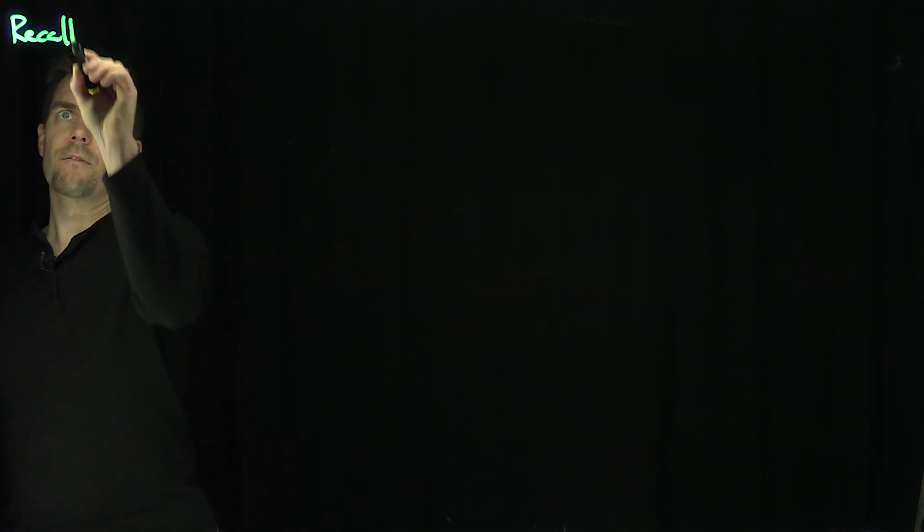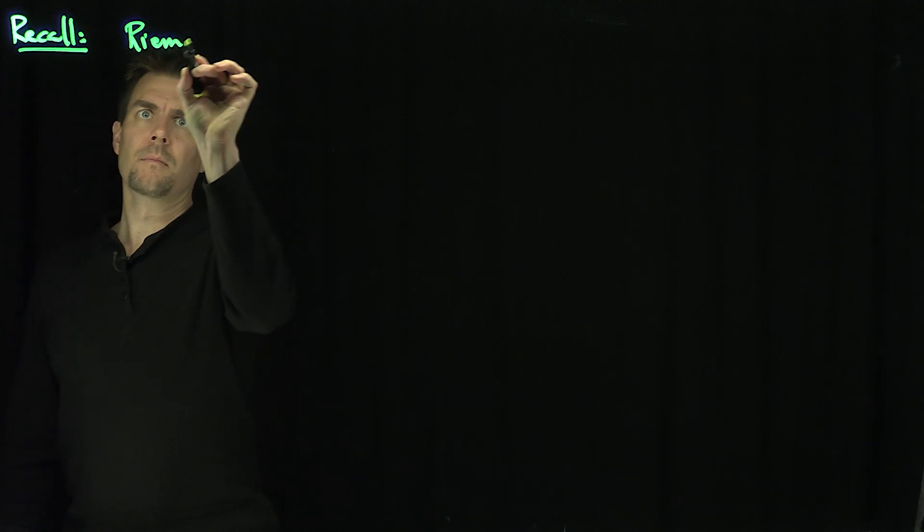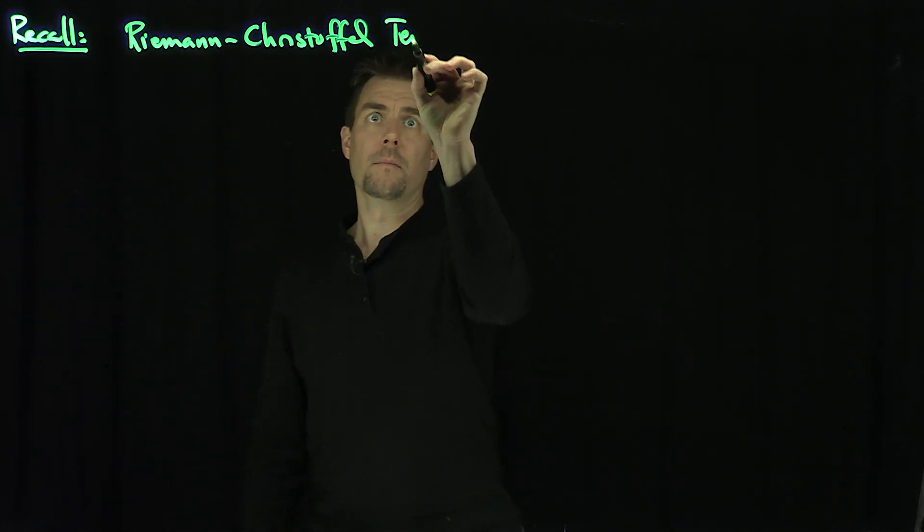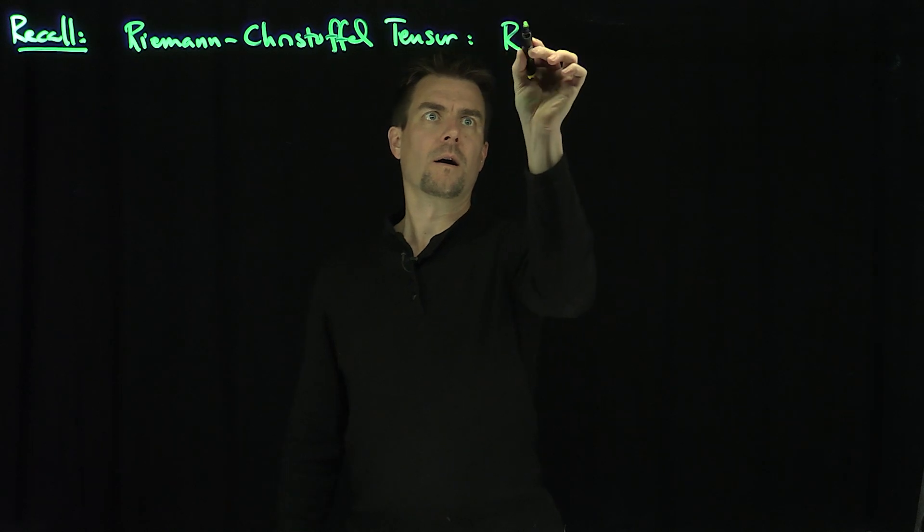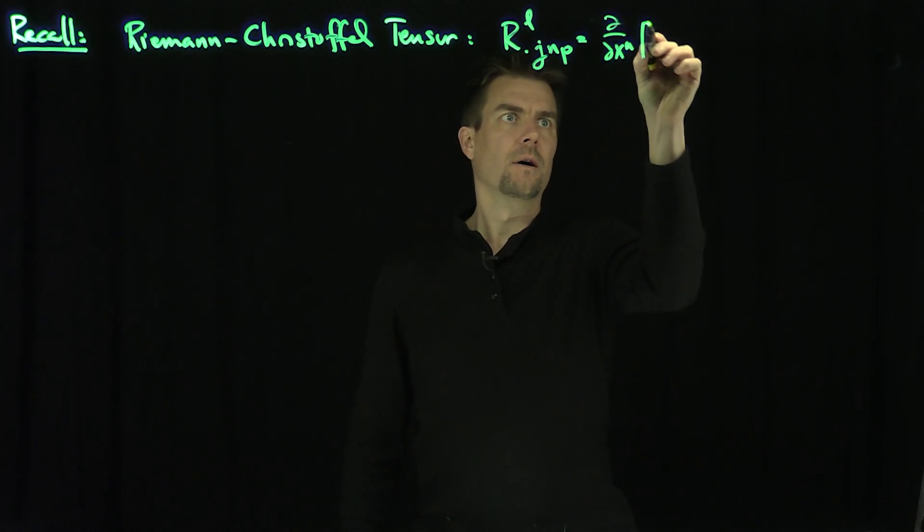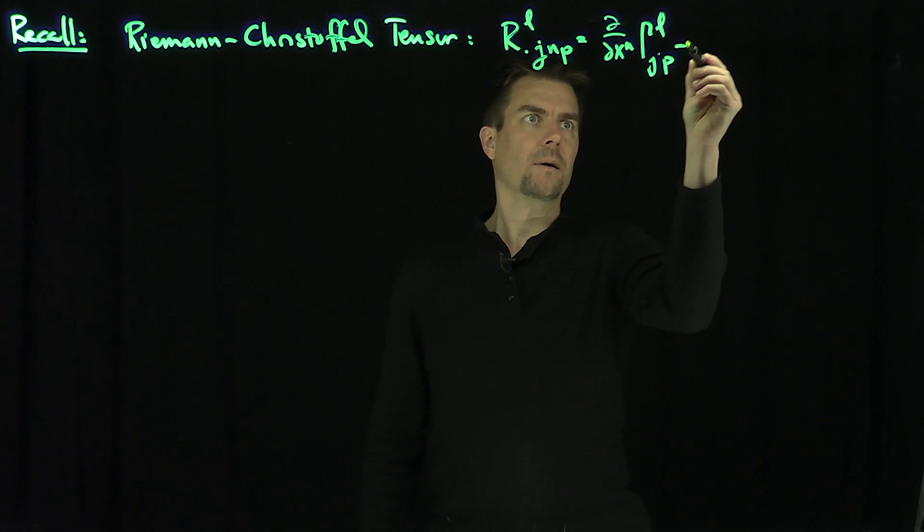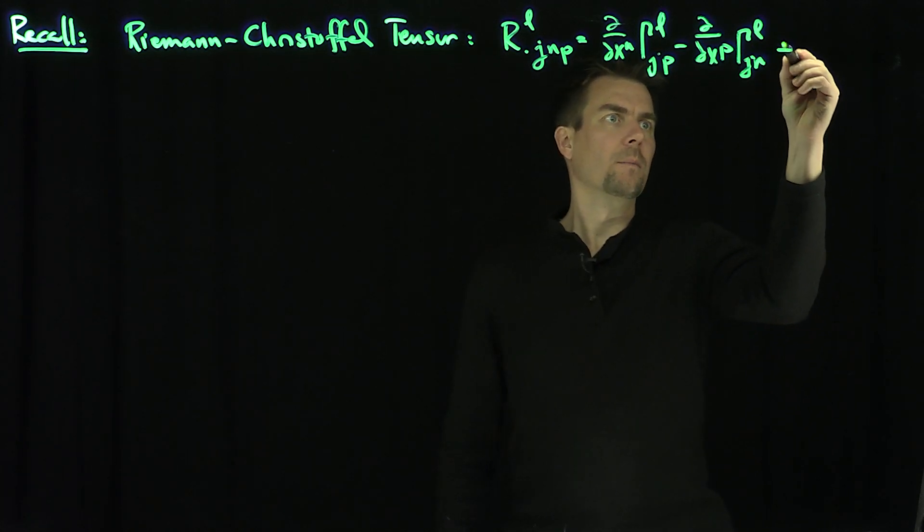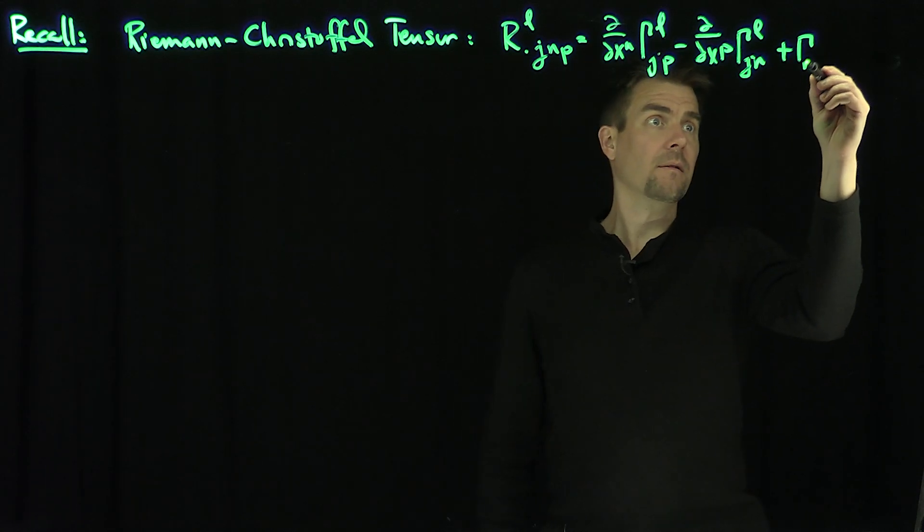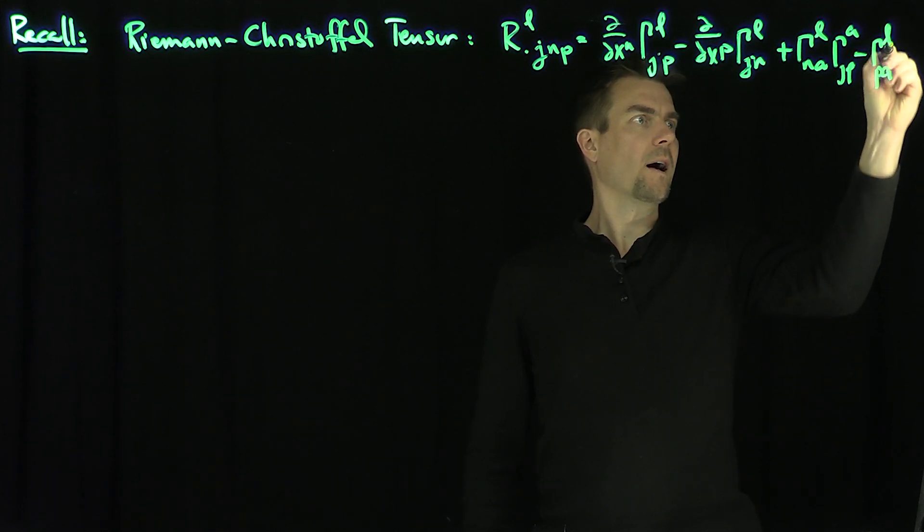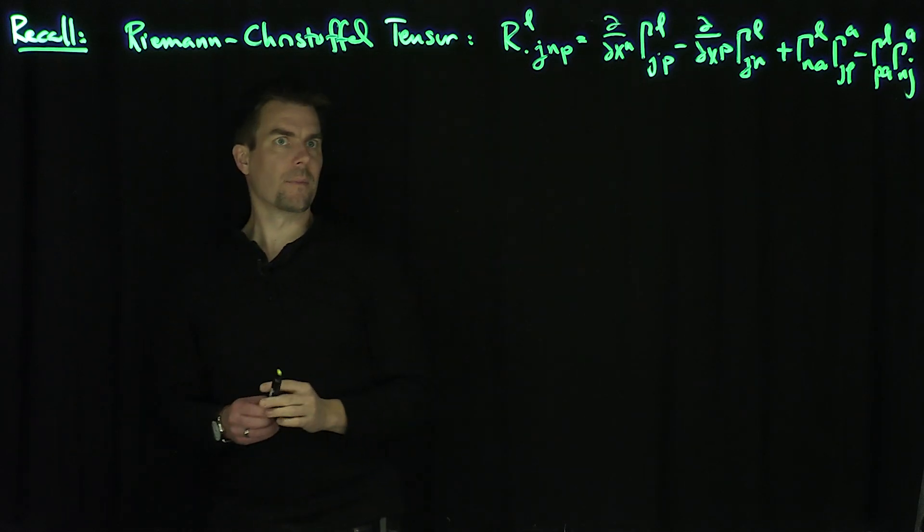Let's recall that we have our Riemann-Christoffel tensor R^L_JNP, which is d/dx^N of Gamma^L_JP minus d/dx^P of Gamma^L_NJ plus Gamma^N_AL times Gamma^A_JP minus Gamma^P_AL times Gamma^A_NJ. That's our Riemann-Christoffel tensor.